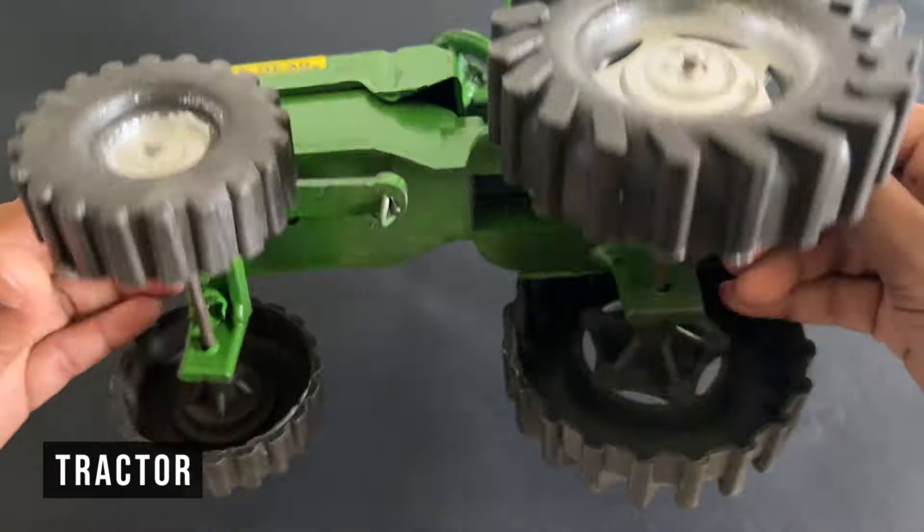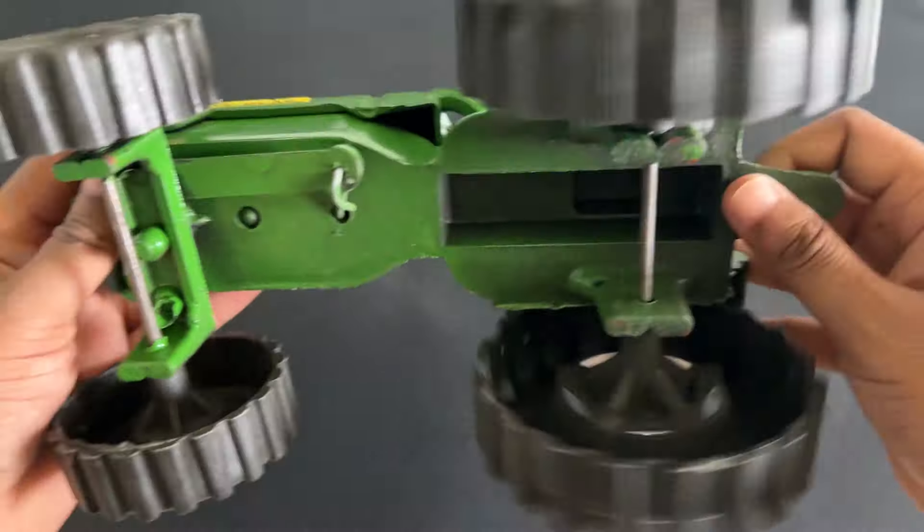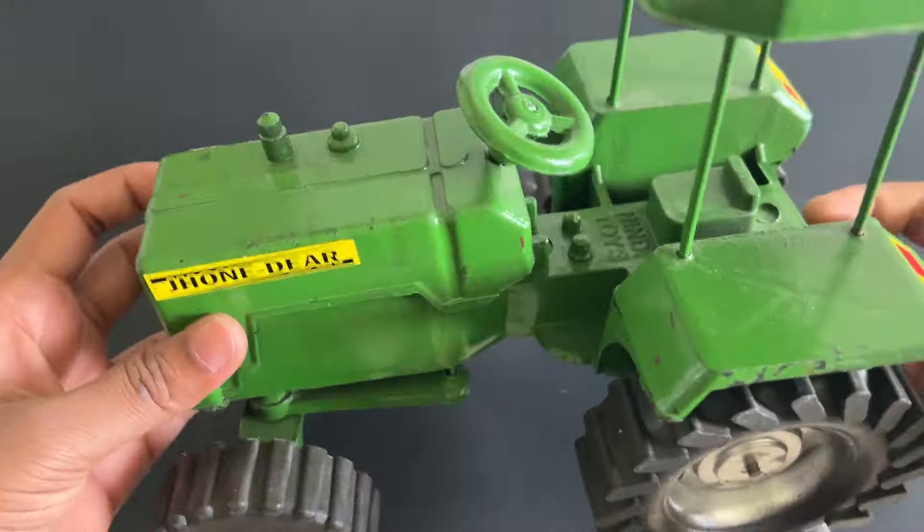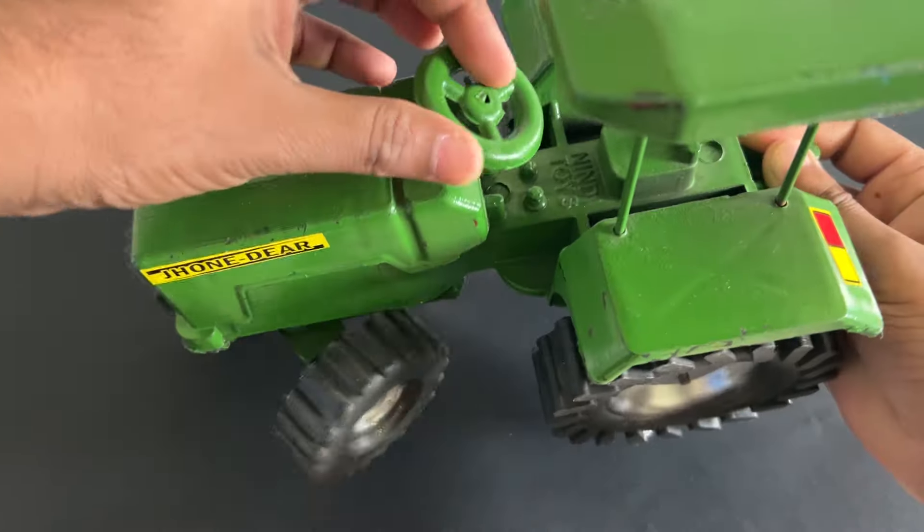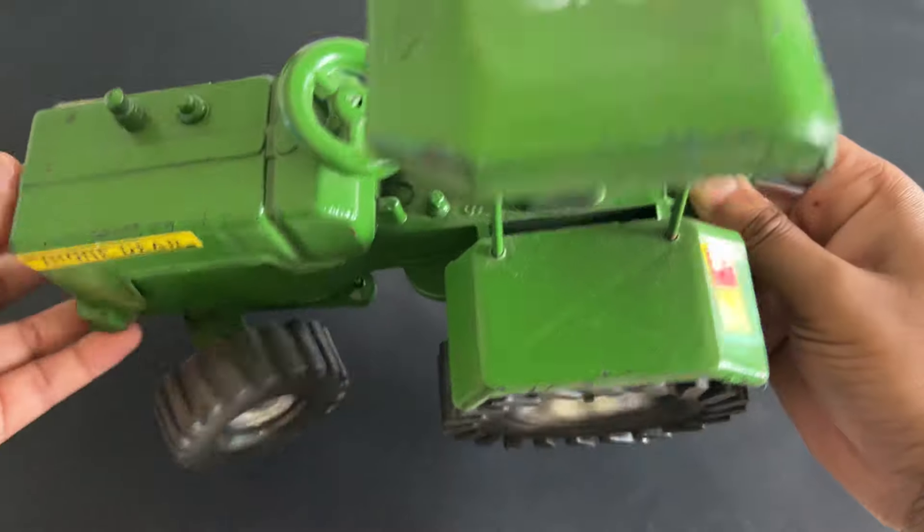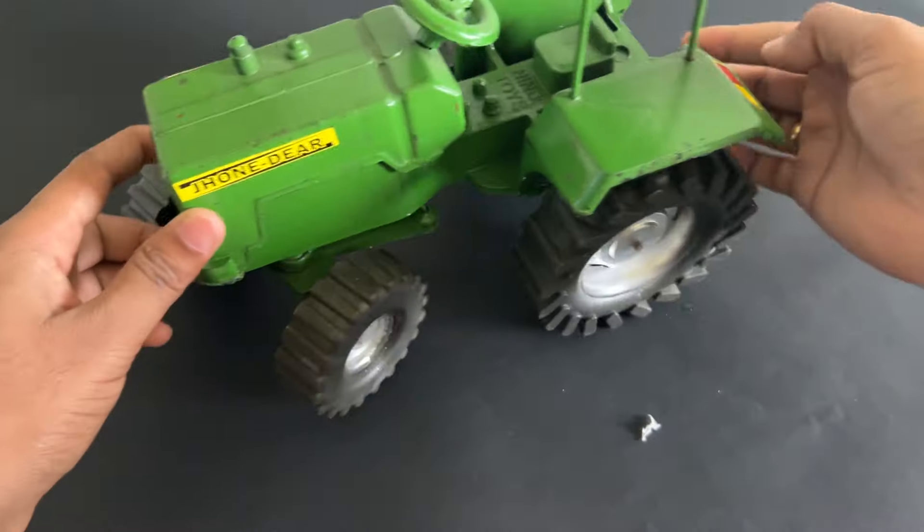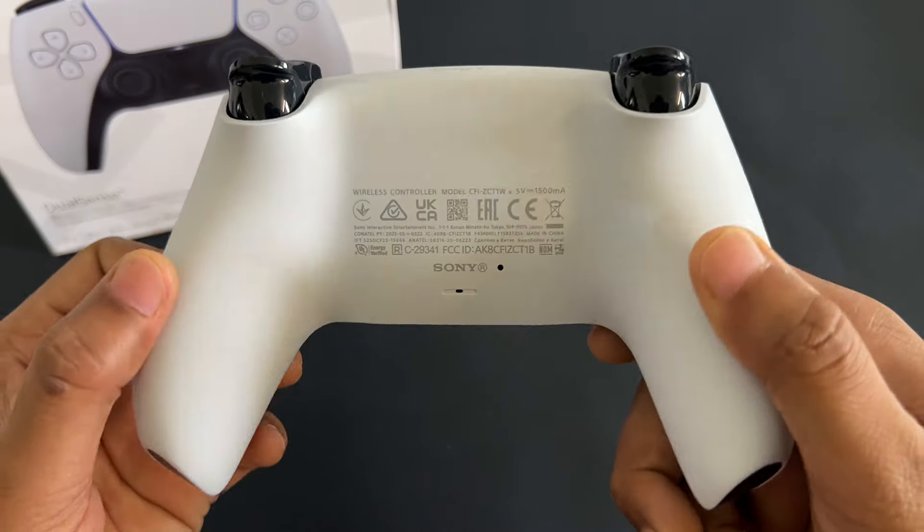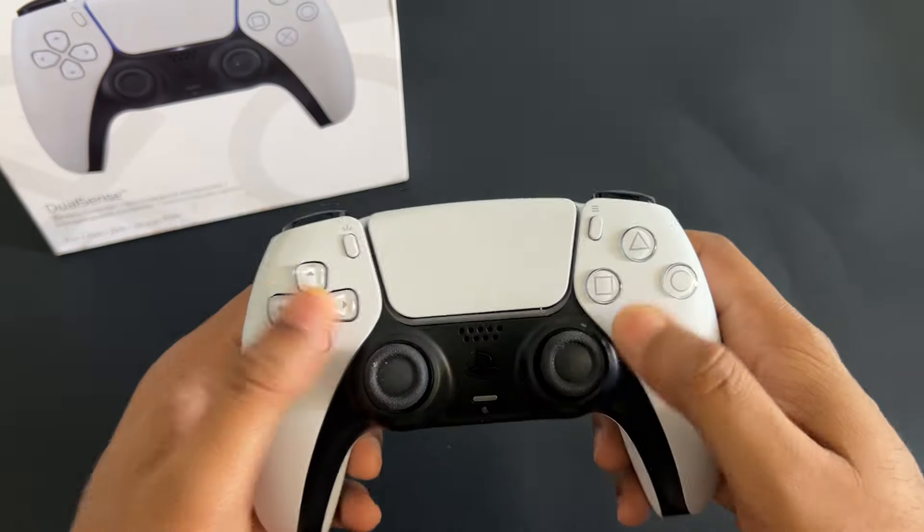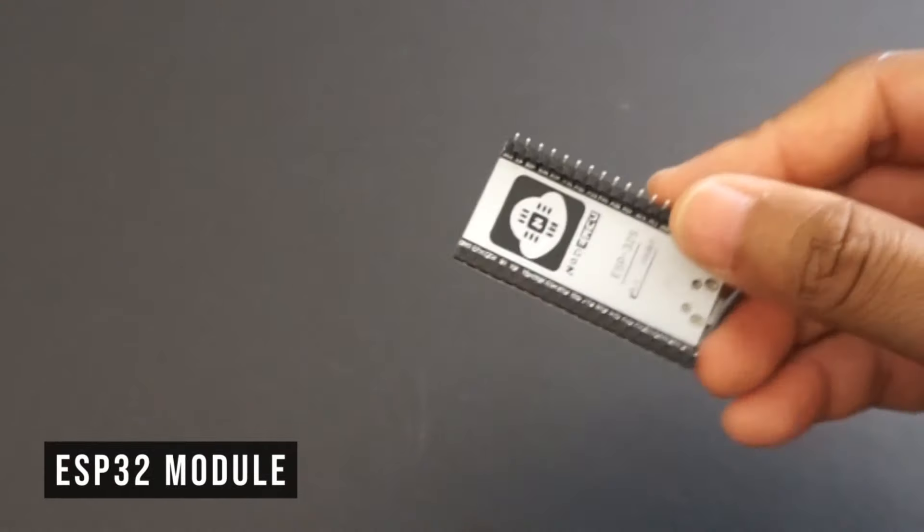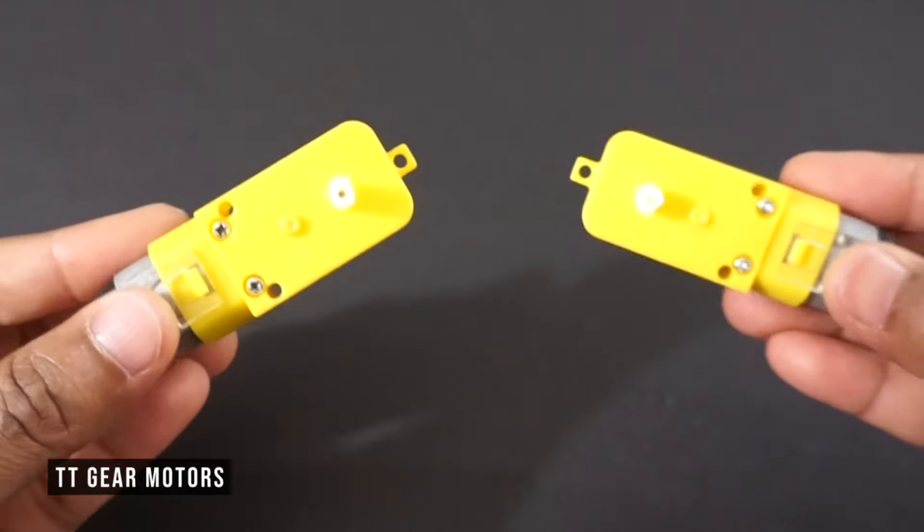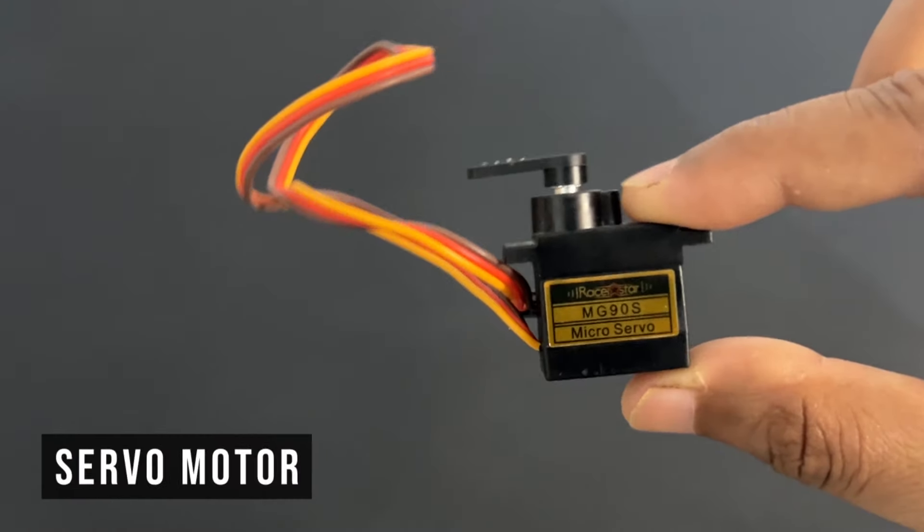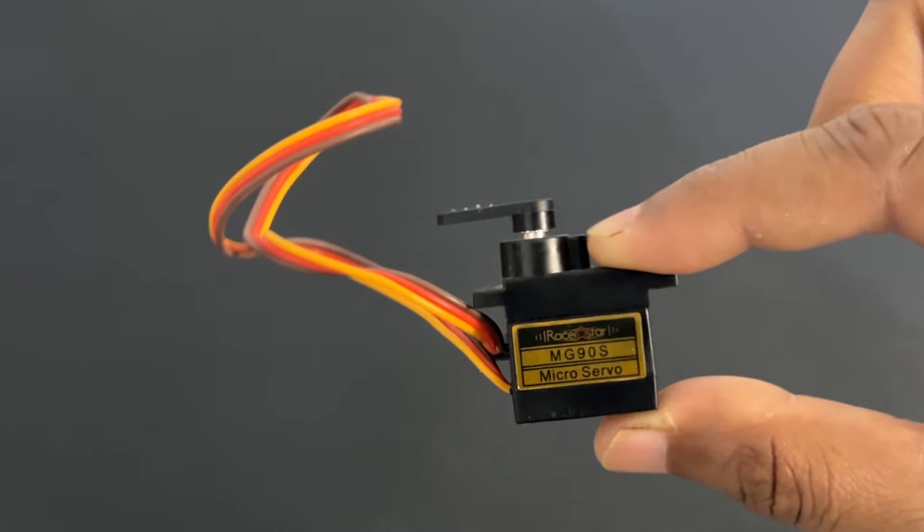For making this tractor, we will need the tractor body, PS5 controller, ESP32 module, TT gear motors, and a servo motor. We will use the MG90 servo motor.